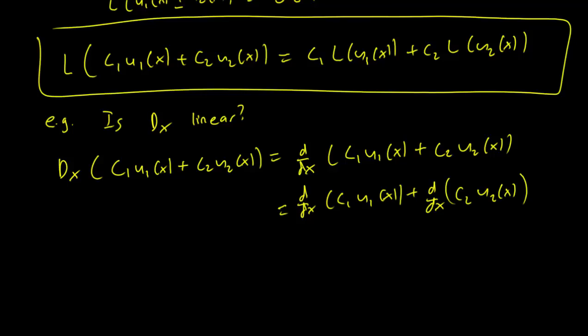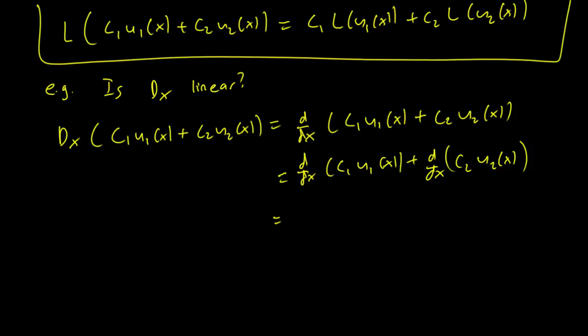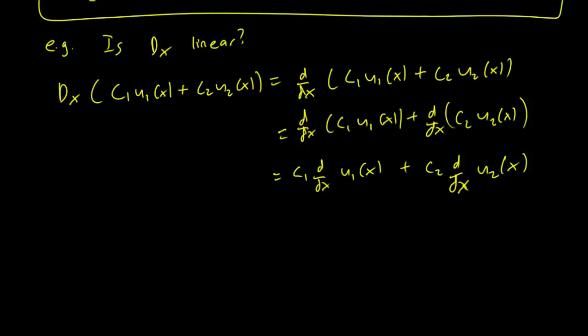And also you can pull constants in and out of derivatives. So you can pull the constants out here. But we know that the derivative of u1(x) can be written down as c1*dx(u1(x)) and the derivative of u2(x) can be written down as c2*dx(u2(x)).